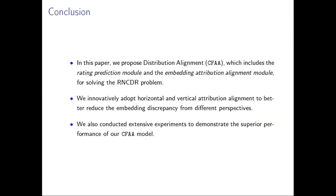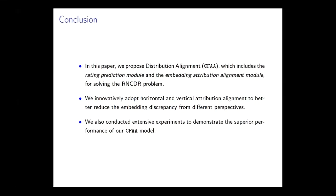Now is the conclusion. In this paper, we proposed collaborative filtering with attribution alignment, CFAA models, which includes the rating prediction model and embedding attribution model for solving the RNCDR problem. We innovatively adopt the horizontal and vertical attribution alignment to better reduce the embedding discrepancy from different perspectives. Vertical distribution alignment utilizes typical sample selection with optimal transport to make them consistent across domains. Horizontal relevance alignments apply subspace modeling with attribution graph alignment to reduce the discrepancy. We also conducted extensive experiments to demonstrate the superior performance of our proposed CFAA on several datasets and tasks. That's all. Thank you for listening.